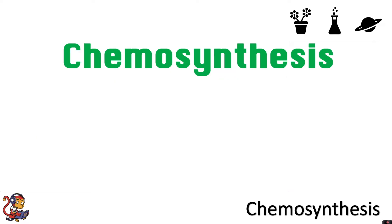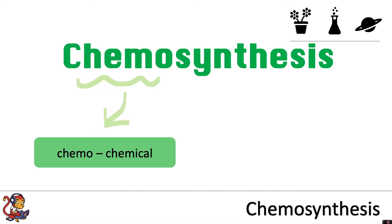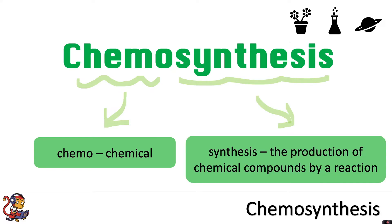So let's now look at chemosynthesis. The chemo part stands for chemical, and the synthesis is the same — the production of chemical compounds by a reaction. So in chemosynthesis, rather than using light to produce chemicals, we are using chemicals to produce other chemicals.